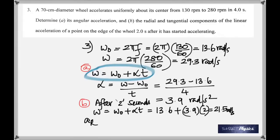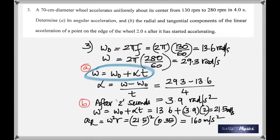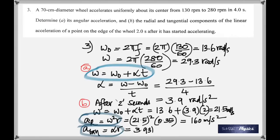The radial acceleration is found using ω²r, just like in the last question. That's 21.5² times the radius, giving 160 m/s². The tangential acceleration is given by the formula r × α. So that's 3.93 times the radius, which gives 1.4 m/s².